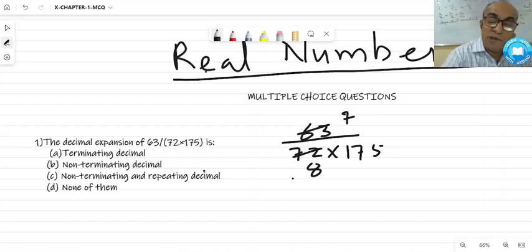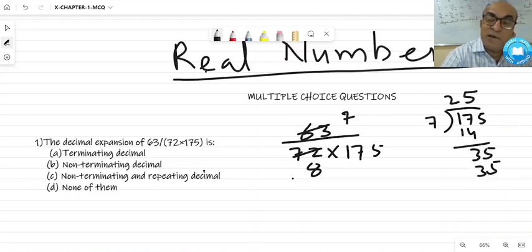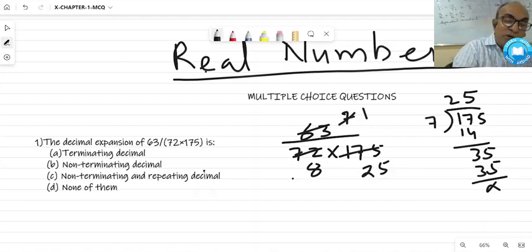175, you have to check it. In working column, if you don't know the table, then check it like this. 175 is divided by 7 or not. 7 times 14 and 7 times 5 is 35. Yes, it is in the table. So, 25.